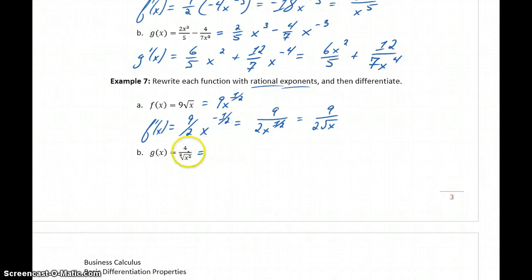In part b, we have 4 over the cube root of x squared, which is the same thing as 4 over x to the 2 thirds, which is the same thing as 4 times x to the negative 2 thirds. Again, we've got a power function. So g prime of x is going to be negative 8 thirds x to the negative 5 thirds, which we could rewrite as negative 8 over 3x to the 5 thirds, or negative 8 over 3 times the cube root of x to the 5th.